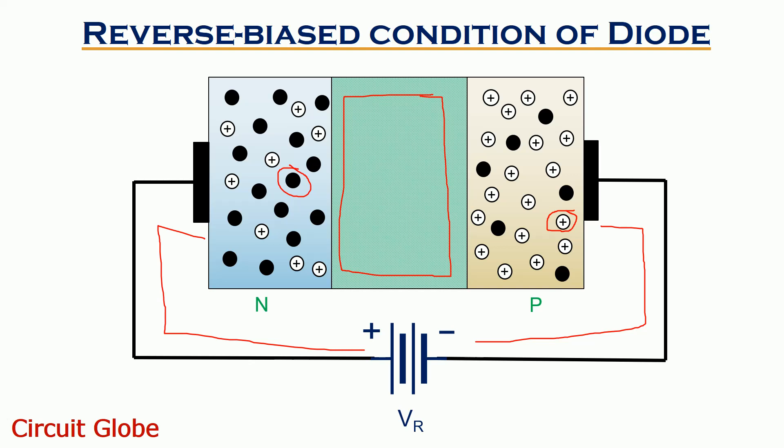It is noteworthy here that after a certain reverse bias voltage, a large reverse saturation current will flow that permanently damages the diode.